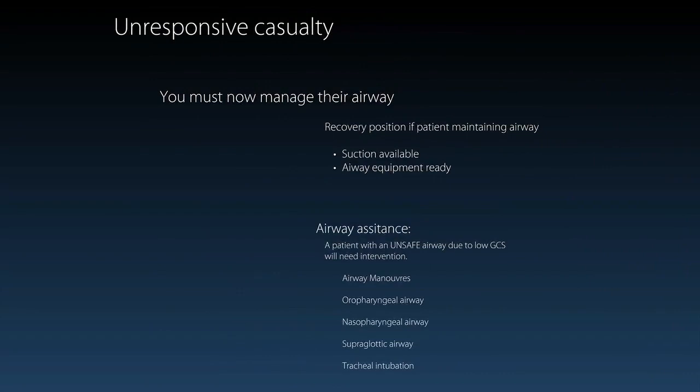With an unresponsive casualty, you become responsible for managing their airway. If the patient is maintaining their airway while unconscious, putting them into the recovery position may be appropriate so they're not at risk of vomiting and obstructing their airway. However, their GCS may fall further and they may lose control of the airway. So you need suction available, proper airway equipment ready, and you should be assessing them regularly and moving them rapidly to hospital.